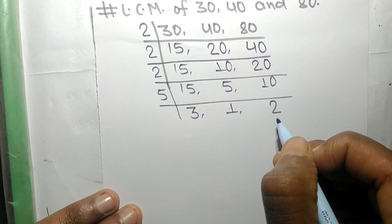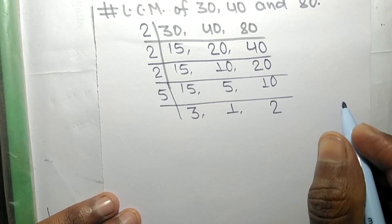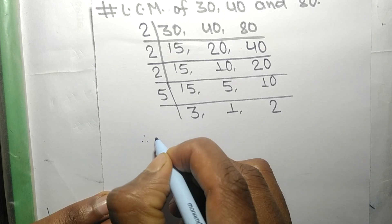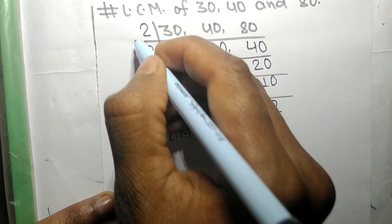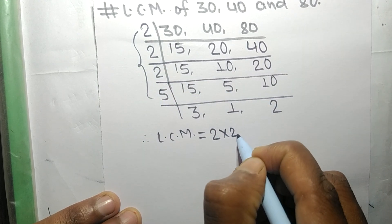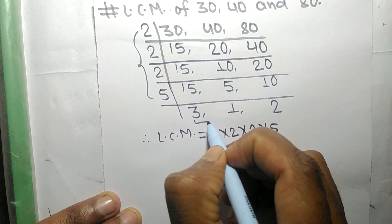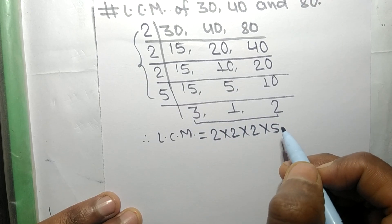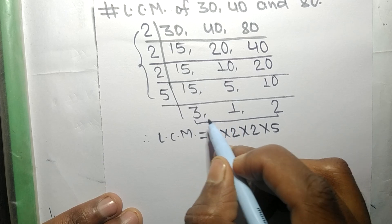Therefore its LCM is equal to from this side it is 2 times 2 times 2 times 5, and from this side we choose the numbers greater than 1, that is 3 and 2.